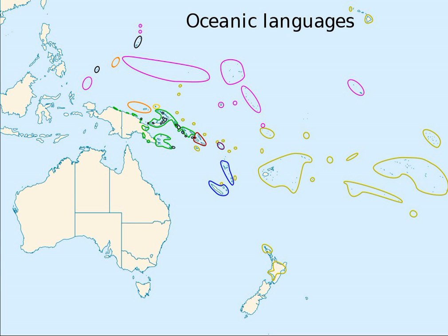Colonial languages include English in Australia, New Zealand, Hawaii, and many other territories; French in New Caledonia and French Polynesia; Japanese in the Bonin Islands; and Spanish on Easter Island.